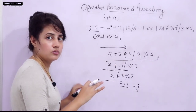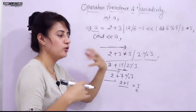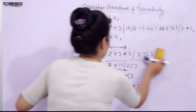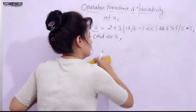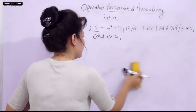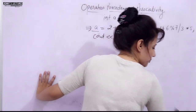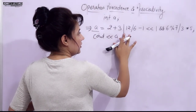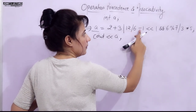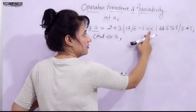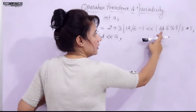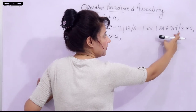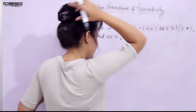Now let's solve a more complex expression with many operators: plus, bitwise OR, divide, minus, left shift, logical AND, modulo, divide, and multiply. First, identify which operators have the highest precedence.